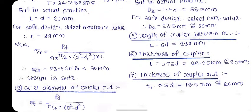Next, check the induced crushing stress using the selected values: length = 39 mm, diameter d = 39 mm, and core diameter dc = 34.093 mm. Substituting into the equation gives the induced crushing stress σcr = 23.66 MPa. Comparing this with the permissible stress of 90 MPa — since the induced stress is less than the permissible stress, the design is safe.